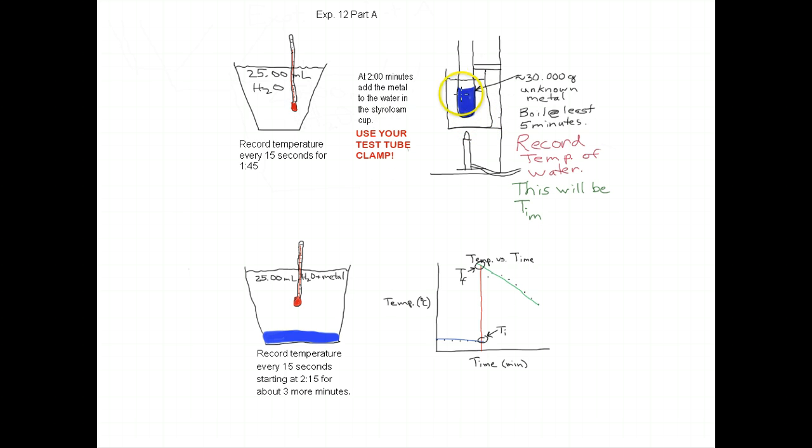Also, while this metal is heating up in the boiling water, you're going to take a styrofoam cup, and you're going to measure 25.00 milliliters of water into it with a volumetric pipette that you get from Brian, and you will put a thermometer in there and record the temperature every 15 seconds for one minute and 45 seconds.